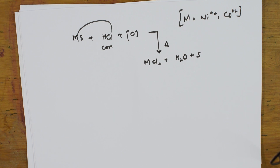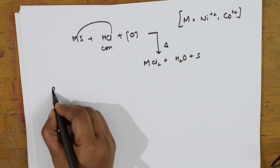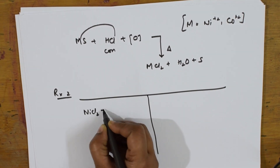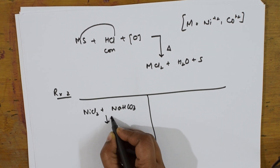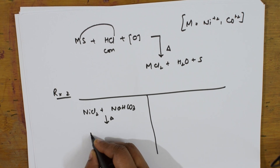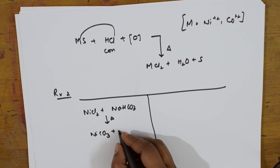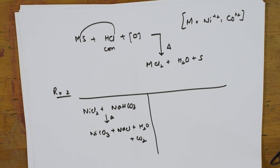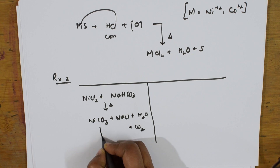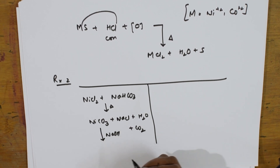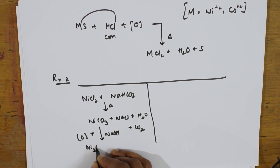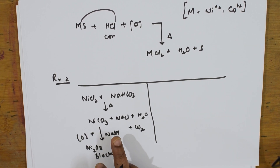One more reaction for nickel: if you have nickel chloride and add sodium bicarbonate and heat, you get nickel carbonate, NaCl, water, and carbon dioxide. To this nickel carbonate, if you add sodium hydroxide and nascent oxygen from bromine water, you get a black precipitate, sodium carbonate, and water.